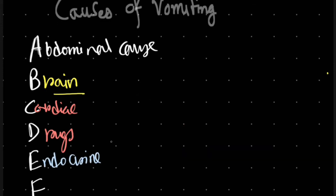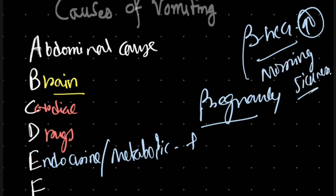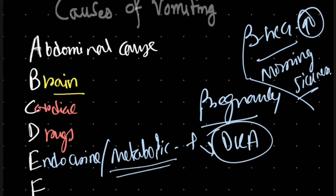E is for endocrine or metabolic causes. Endocrine causes include pregnancy, where high beta-hCG levels can cause morning sickness. Metabolic causes include diabetic ketoacidosis, which can also cause vomiting.